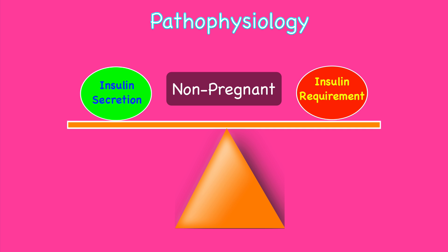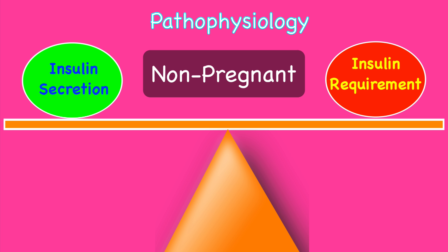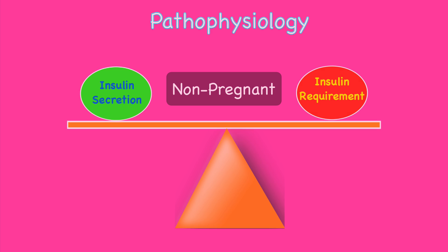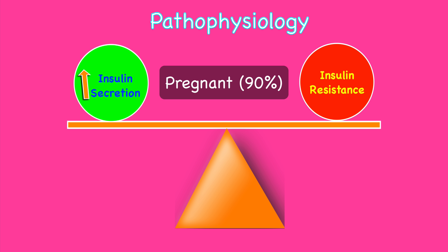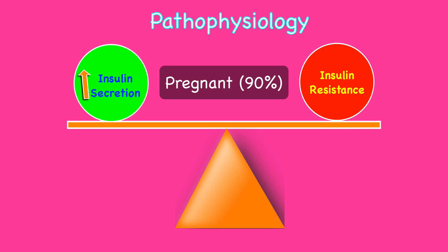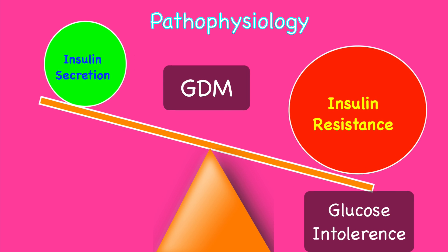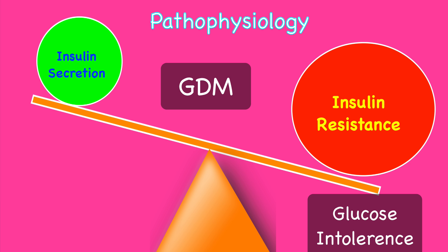Using simple illustrations: in normal individuals, insulin secretion is proportional to the insulin requirement, so there is no diabetes. But when the woman becomes pregnant, there is insulin resistance as a result of anti-insulin hormones produced by the placenta. However, the maternal beta cells of the pancreas are able to compensate by increasing insulin production to match the need, so there is no glucose intolerance. In about 10% of women, however, the pancreas is unable to increase insulin secretion enough to overcome the insulin resistance that develops in pregnancy, resulting in glucose intolerance — and this is called gestational diabetes.